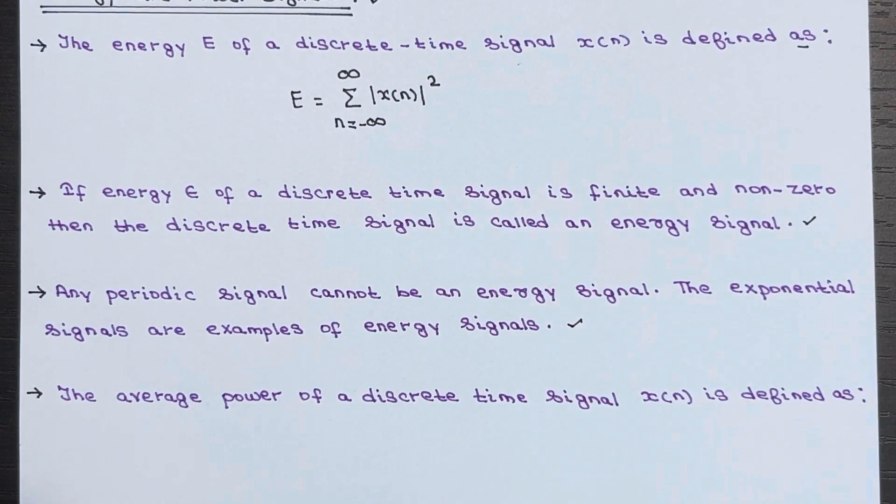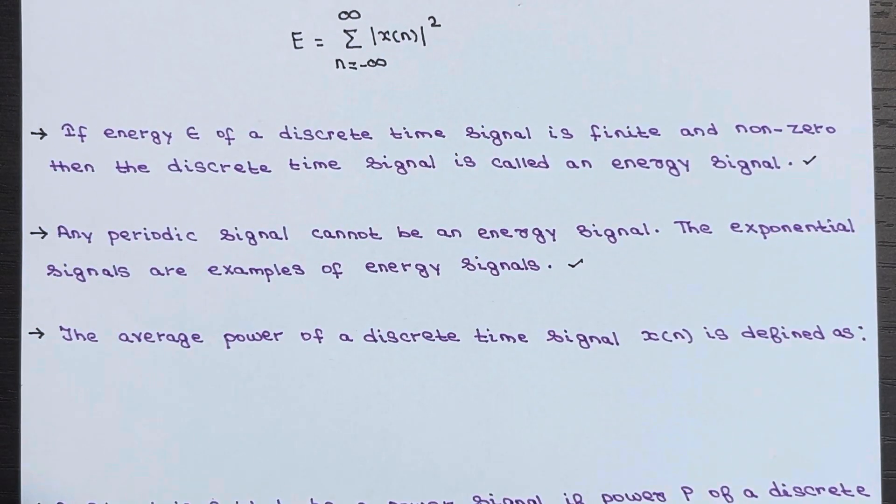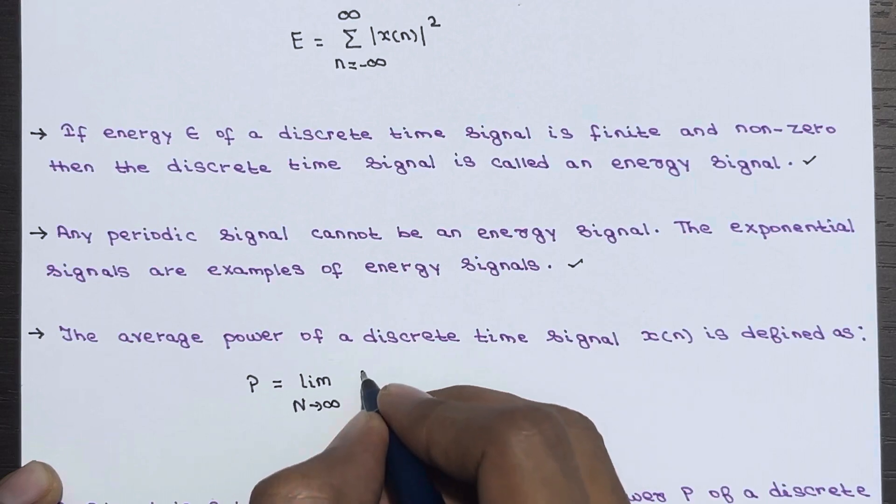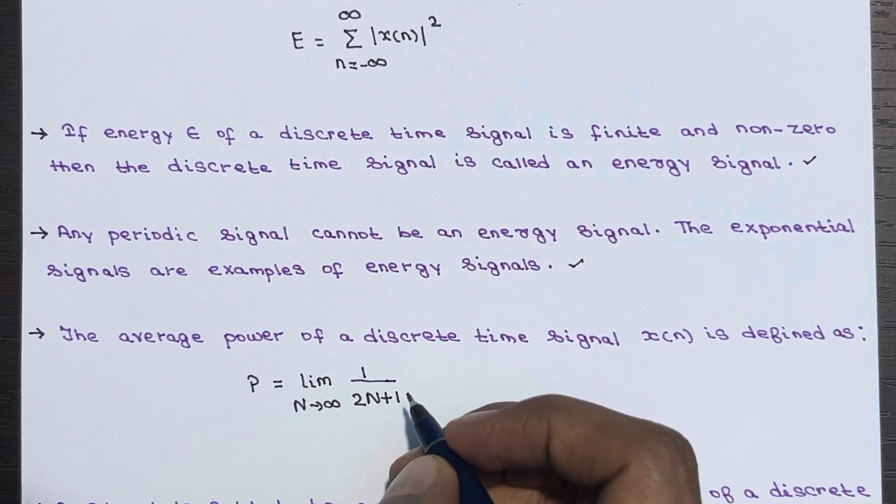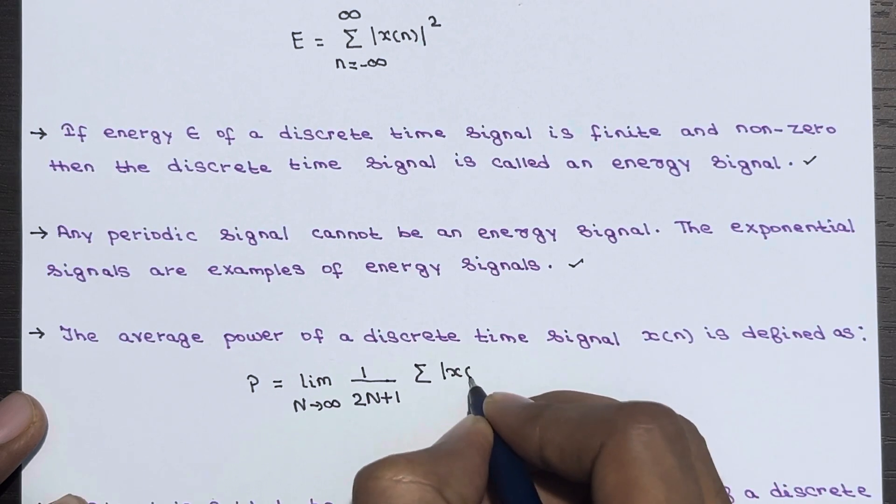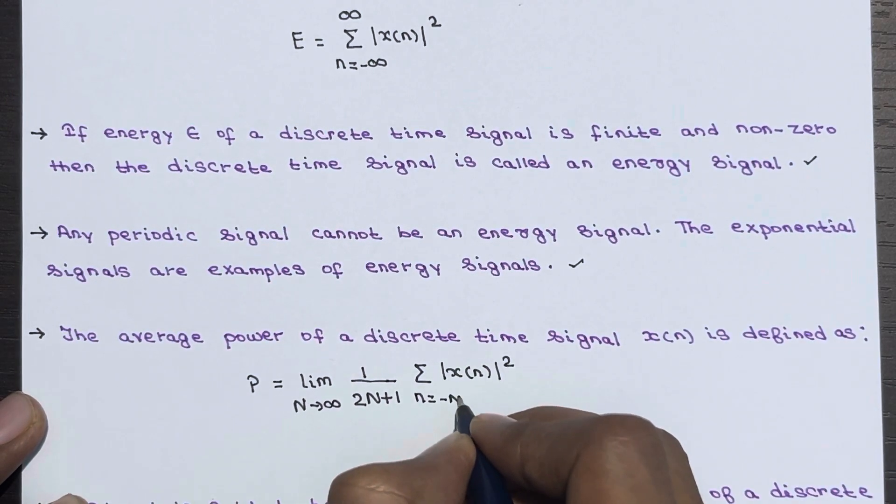Now the average power of a discrete-time signal, denoted as P, is defined as P equals limit as N tends to infinity of 1 divided by (2N+1) times the summation of absolute square of x(n), where n ranges from minus N to plus N.